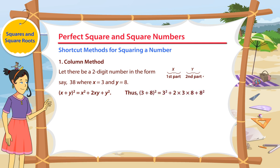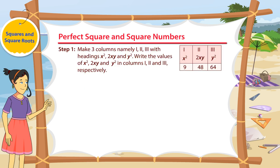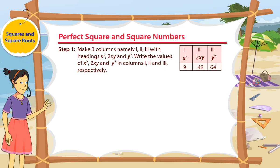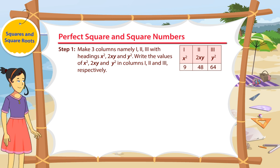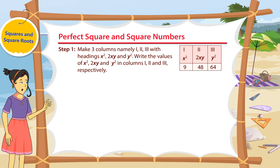The rule used is: x plus y whole square is equal to x square plus 2xy plus y square. Thus, 3 plus 8 whole square is equal to 3 square plus 2 into 3 into 8 plus 8 square. Step 1: Make three columns, namely 1, 2, 3, with headings x square, 2xy, and y square. Write the values of x square, 2xy, and y square in columns 1, 2, and 3 respectively.